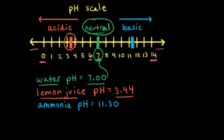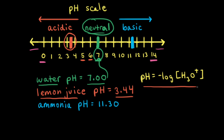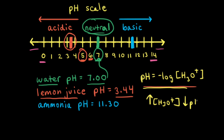As you go to the left on the pH scale, you increase in acidity. For example, a solution with a pH of 5 is more acidic than a solution with a pH of 6. And because this is a log base 10 system, the solution with a pH of 5 is 10 times more acidic. Because of the way the equation is written, the higher the concentration of hydronium ions, the lower the pH value; and the lower the concentration of hydronium ions, the higher the pH value.